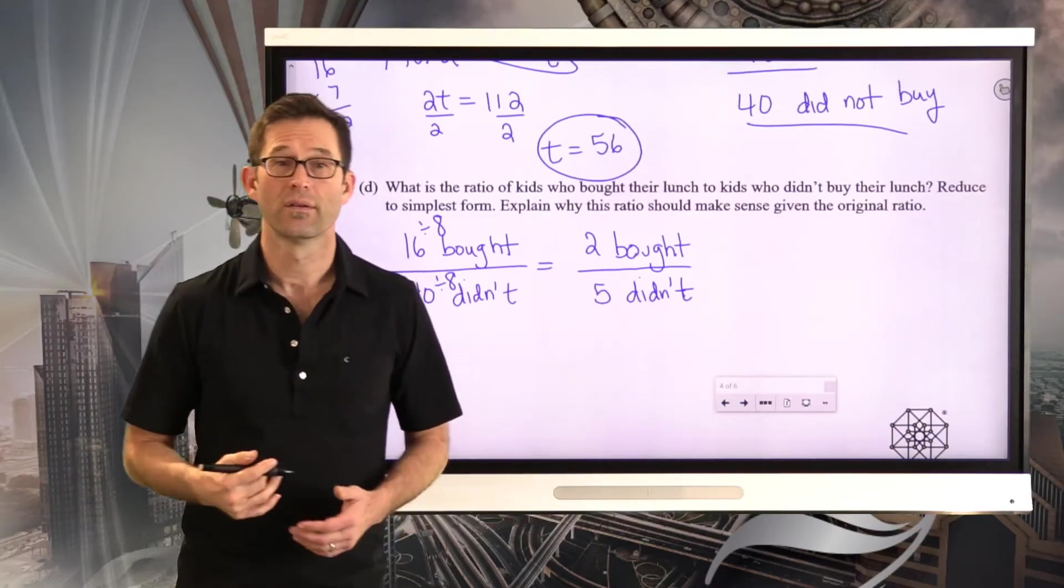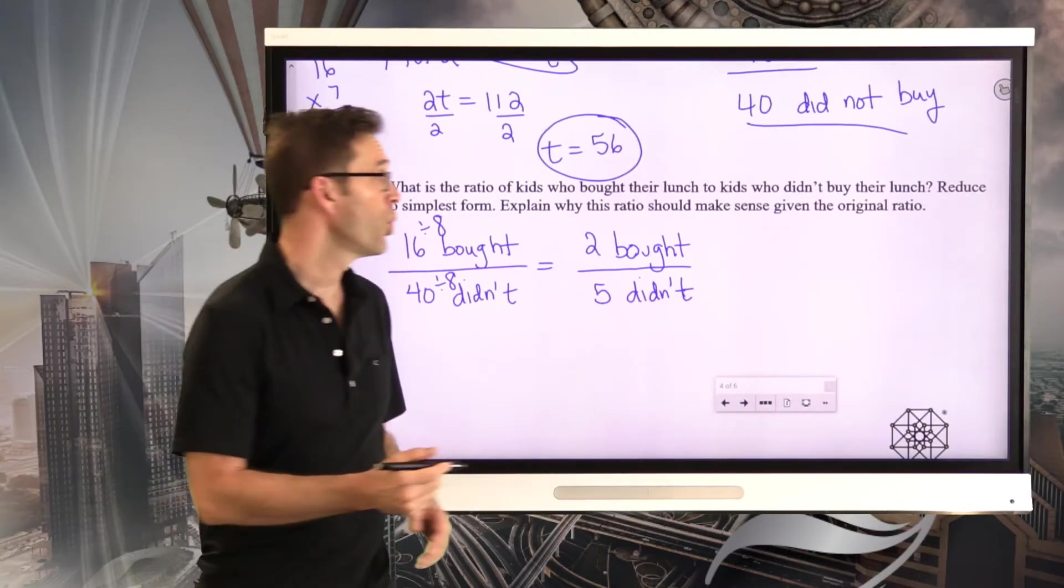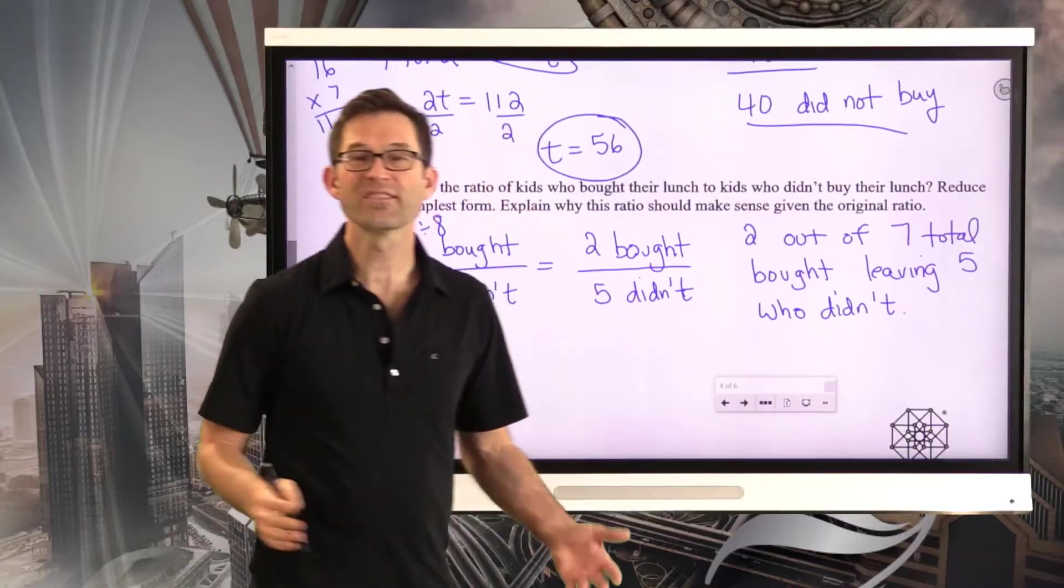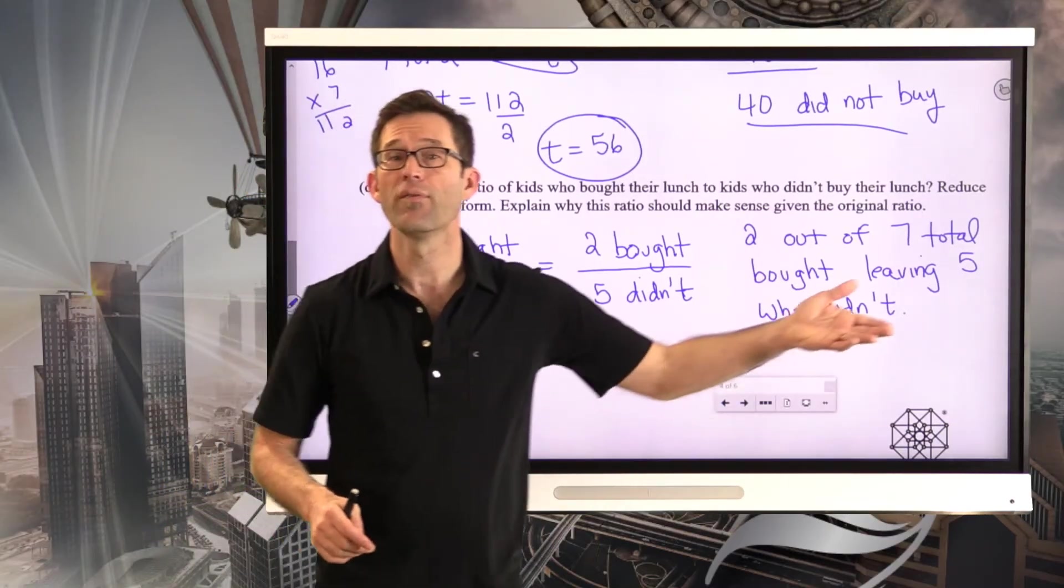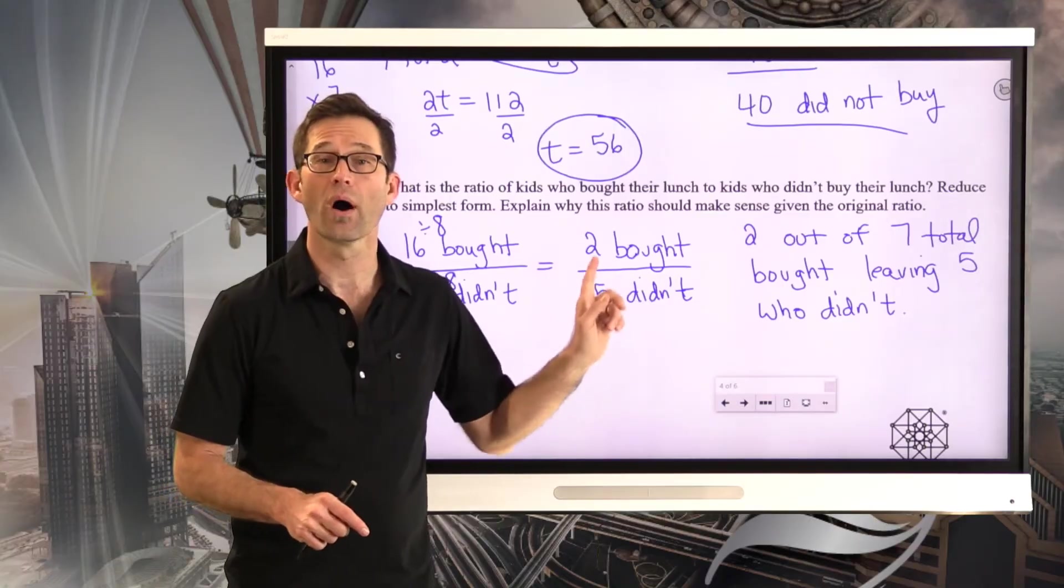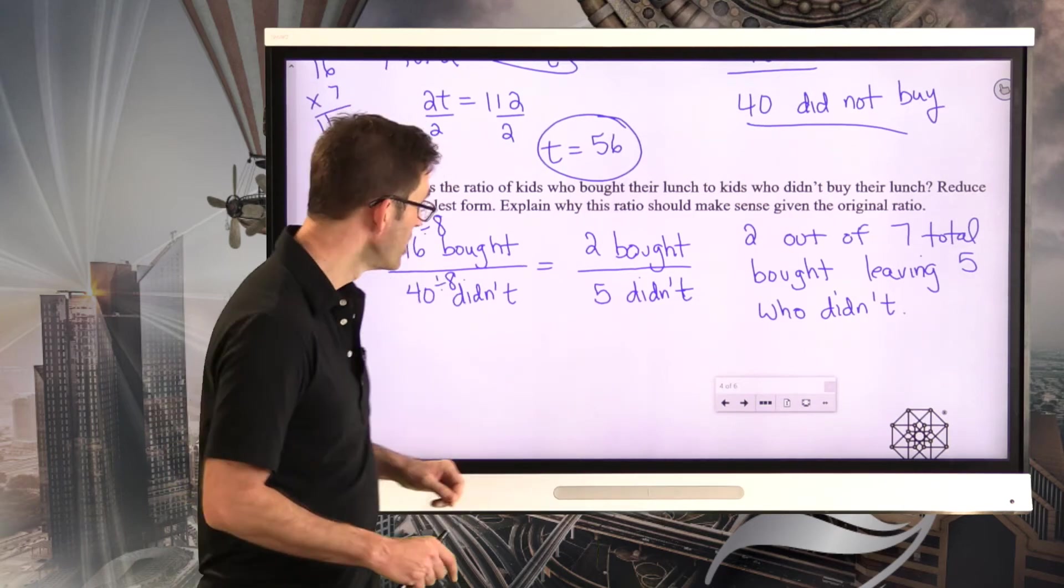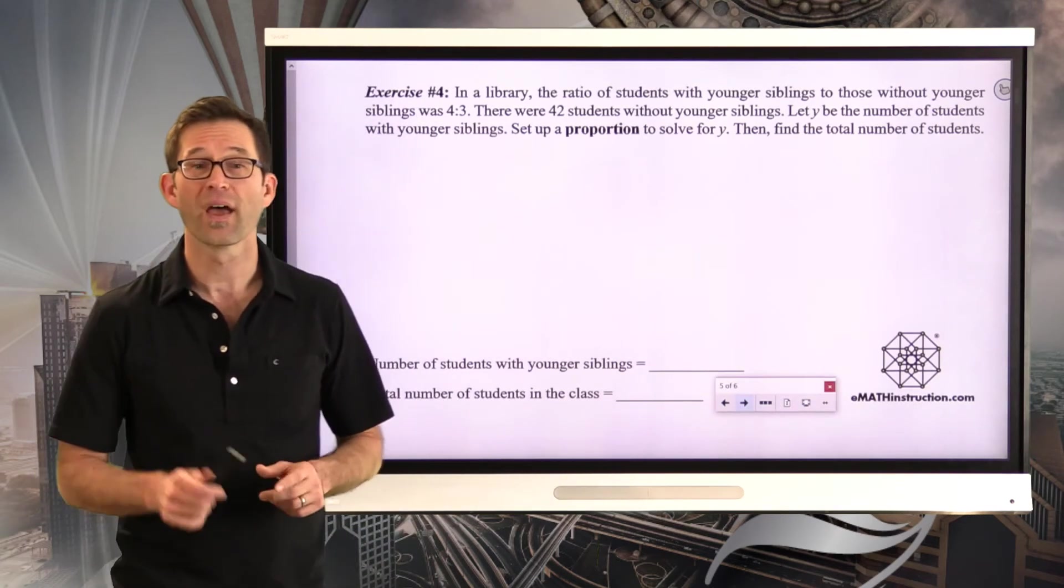Now, why does that make sense? Well, we knew 2 out of 7 total bought, leaving 5 who didn't. Makes sense. If for every 7 kids, 2 of them bought, then 5 of them wouldn't have bought, which means that the ratio of those who bought to those who didn't would have to be 2 to 5. Probably could figure that out right up front. Let's take a look at one more problem. Exercise number 4.